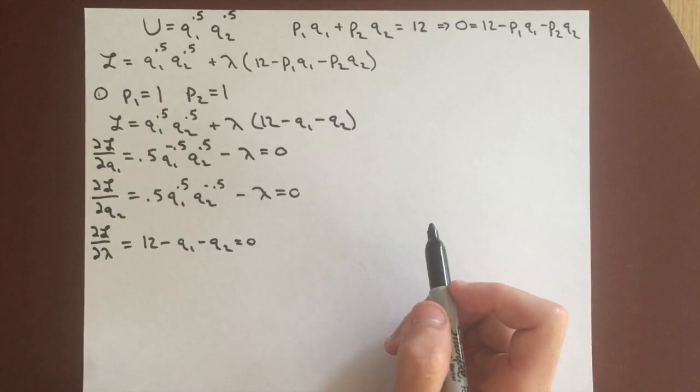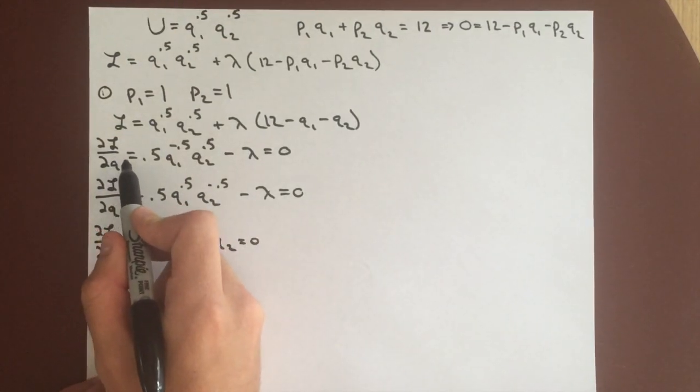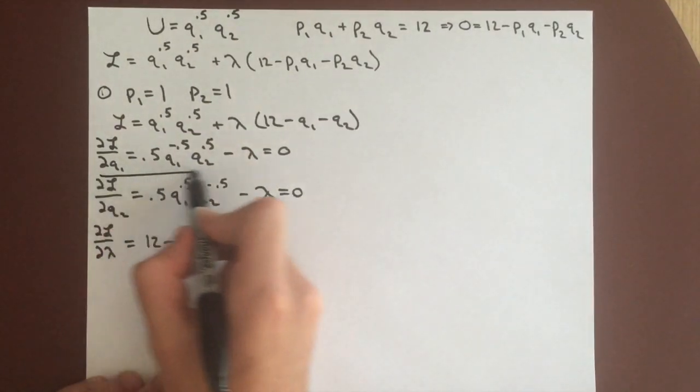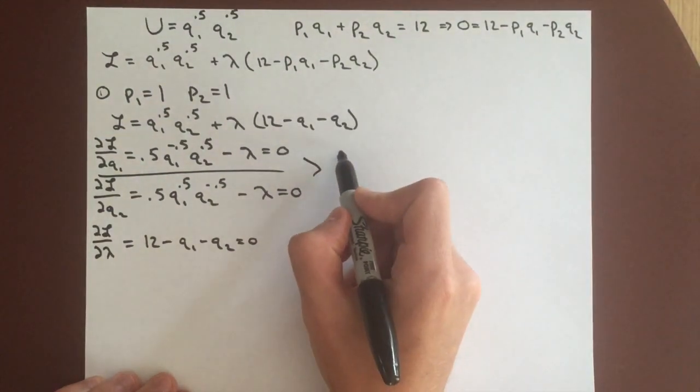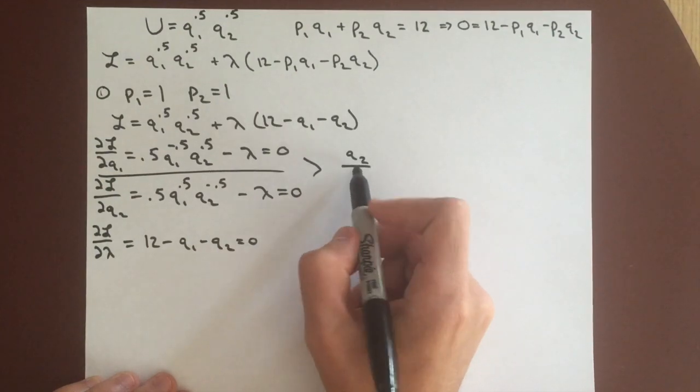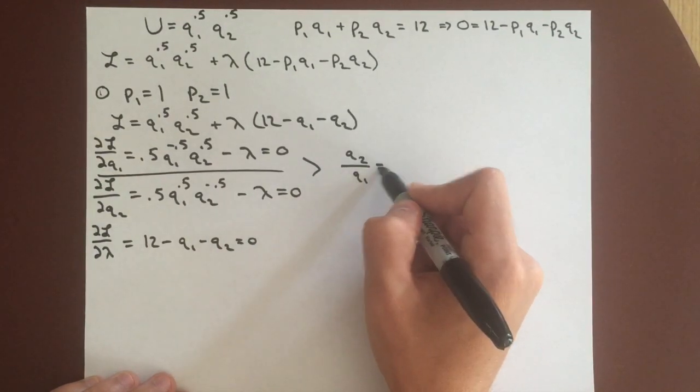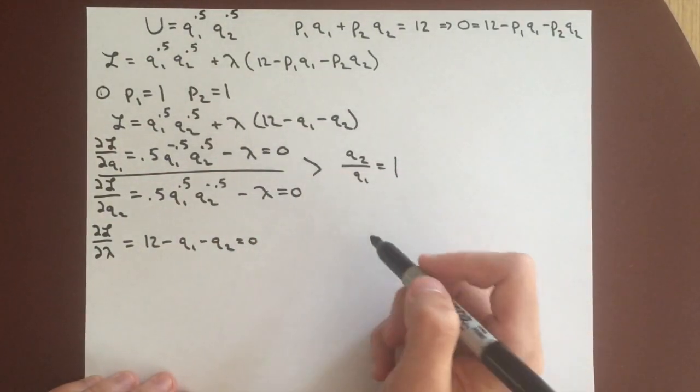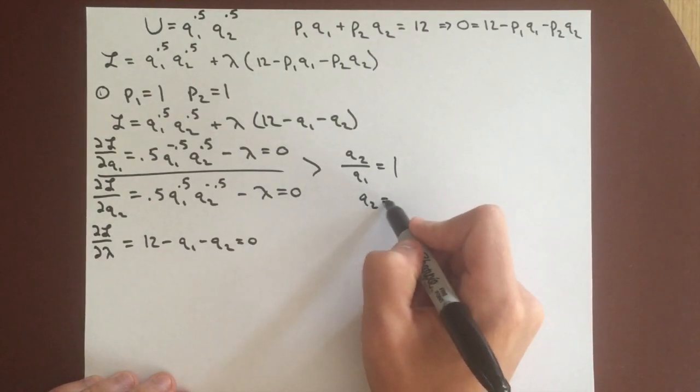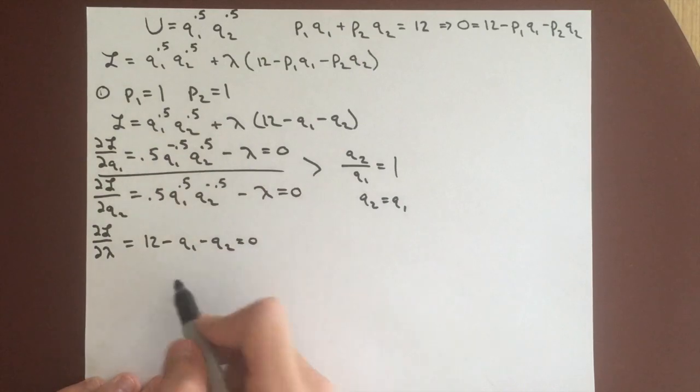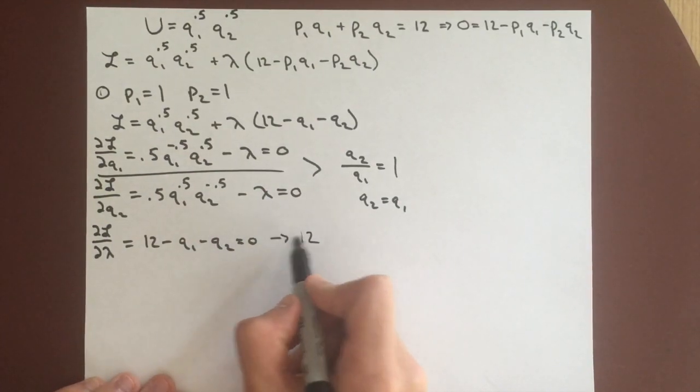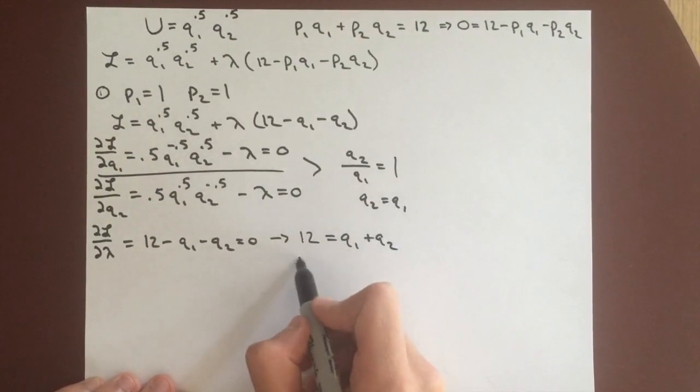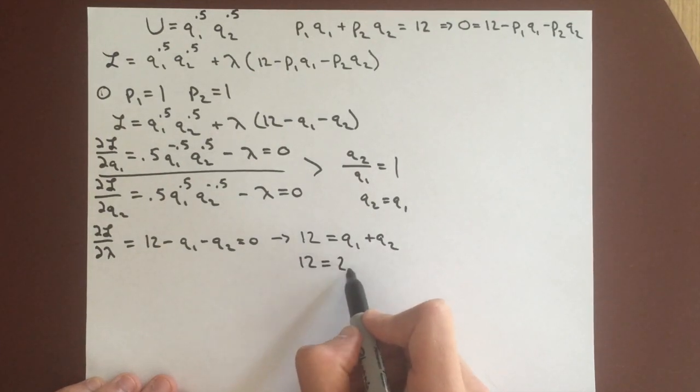And so for this, we can divide the partial derivative of q1 over the partial derivative of q2. And so when we do this, we'll get q2 over q1 equals 1, because we take these lambdas to the other side. We can see that q2 equals q1, and so we can plug this into our budget constraint, and get 12 equals q1 plus q2, which equals 12 equals 2q1, and q1 equals 6.